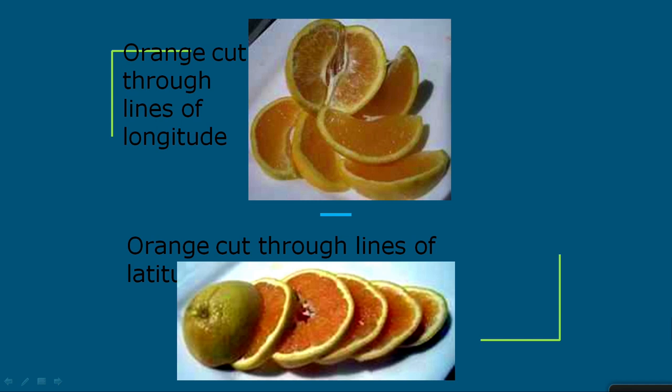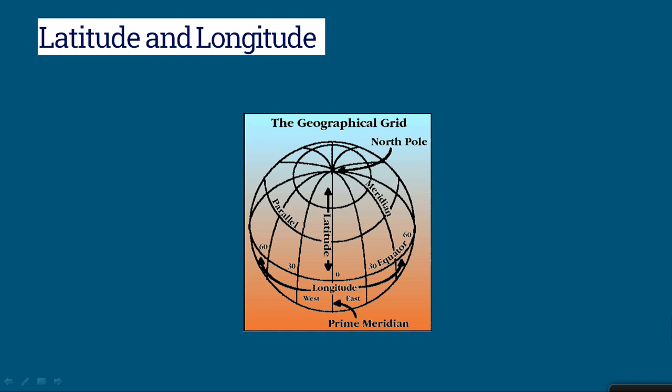Sir has prepared certain slides. Let's understand the whole concept of India's size and location with their help. As explained, if you take an orange and cut it horizontally, it makes perfect circles — those are latitudes. If you slice it from top to bottom, it makes semicircles — those are longitudes. In the slide we can see the entire latitudinal and longitudinal grid pattern. Through this grid only we are able to locate the exact location of any place.